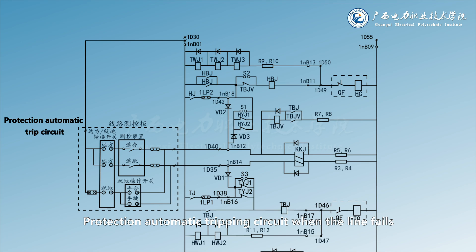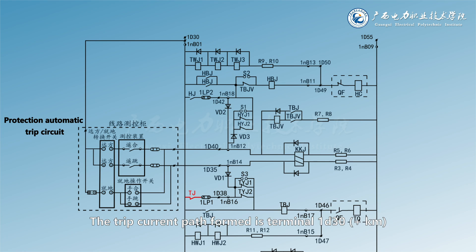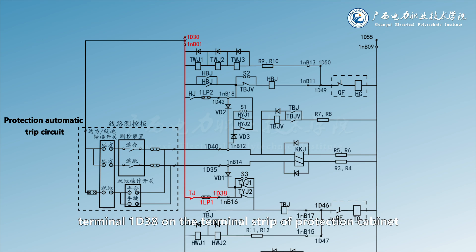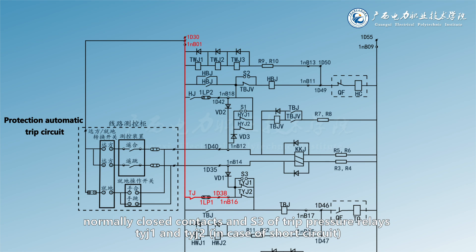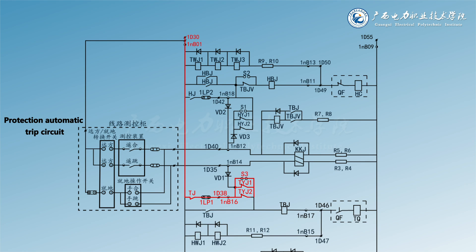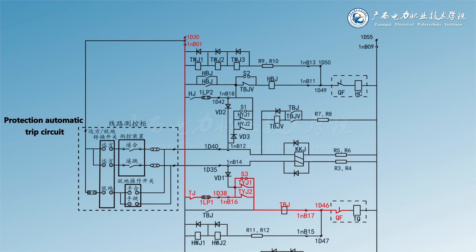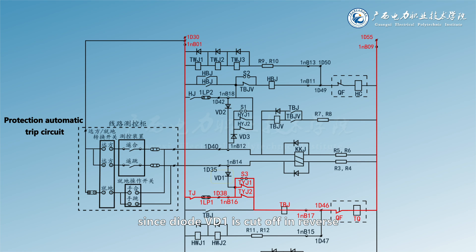For protection automatic tripping: when the line fails, the protection device will act, and the normally open contact of its tripping outlet relay TJ closes to trip the circuit breaker. The trip current path formed is: 1D30, 1NB01, 1LP1, 1D38, 1NB16, S3, TYJ1 and TYJ2, TBJ, 1NB17, 1D46, QF, TQ, 1NB09, 1NB15, 1D15. Different from manual tripping, since diode VD1 is cut off in reverse, the closed position relay KKJ will not return during protection tripping.